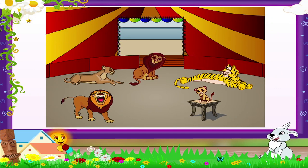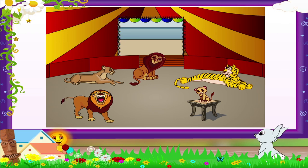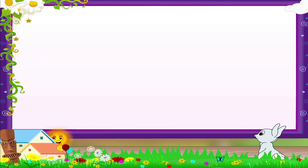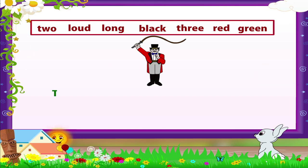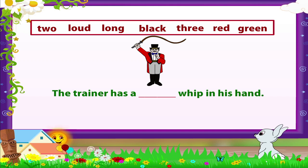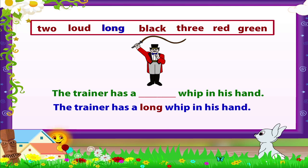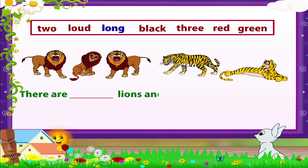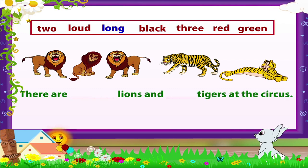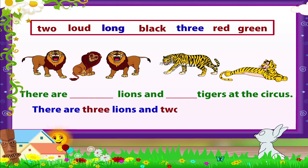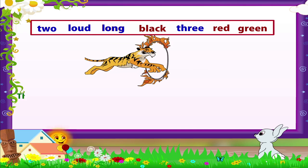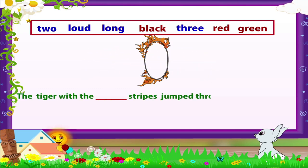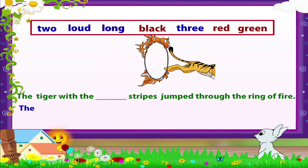Aren't you scared, Rainbow? Look at these lions and tigers — all ready to perform for us! Let's do an activity together. Fill in the blanks with adjectives from the help box. The trainer has a long whip in his hand. There are three lions and two tigers at the circus. The tiger has a loud roar. The tiger with the black stripes jumped through the ring of fire.